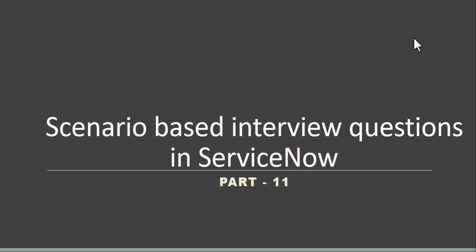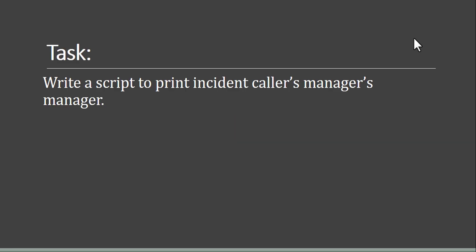Today's task is: write a script to print an incident caller's manager's manager. You know we have the incident table with some records, and if you open a record we have the caller field. Whatever the caller is, we have to print their manager's manager — so it's like a level-two manager. Let's go to the instance and try to implement it.